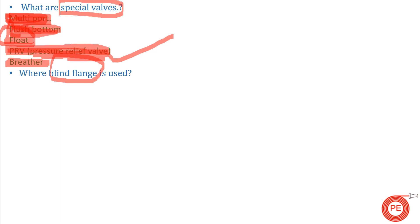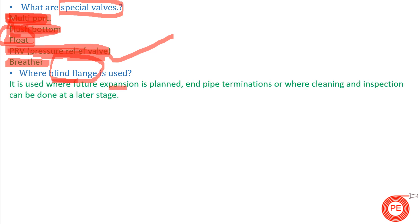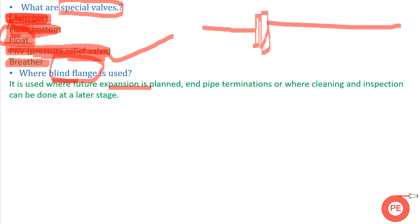The next question is: where is a blind flange used? A blind flange is used where future expansion is planned — if a system has to be constructed in the future, a blind flange is installed so that it can be removed later and piping extended forward. It is also used at end terminations and where regular cleaning is required, as the blind flange can be opened periodically to clean the system.